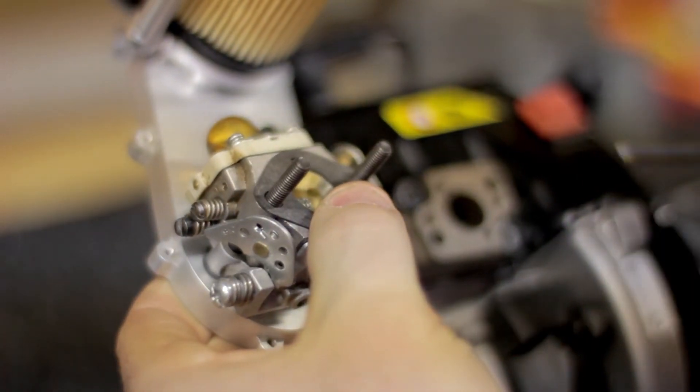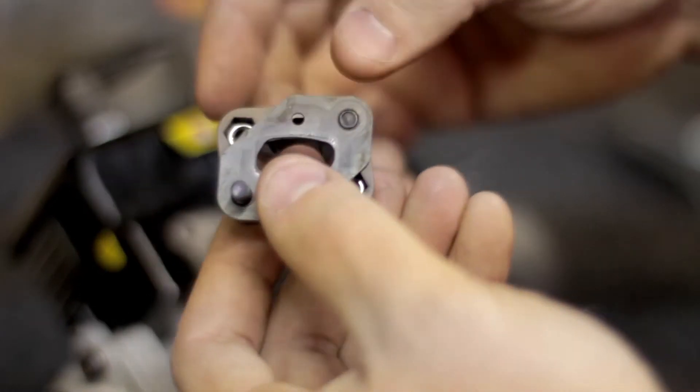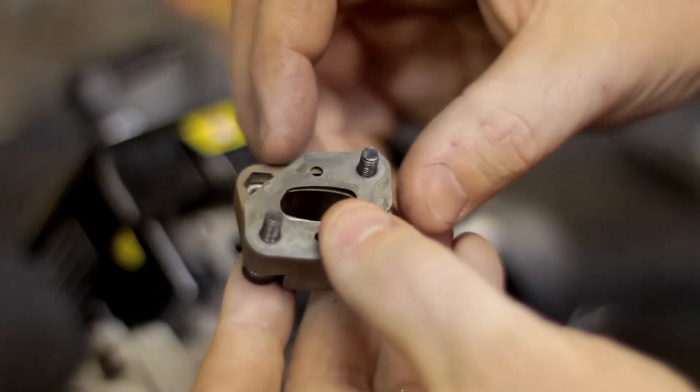On the back side of the carburetor, you'll see the diaphragm air inlet. Next, we want to remove the stock isolator block. You want to flip it over and remove the isolator block gasket.